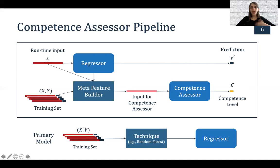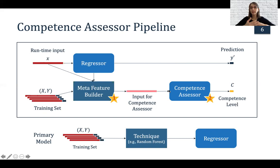The regressor is trained normally — we use your training set over a certain technique, for instance random forest or linear regression, to get our regressor. Now I'm going to focus on the two main parts of the competence assessor: first, the meta feature builder and how we generate the inputs, and then how we train the competence assessor and generate the data to train it.